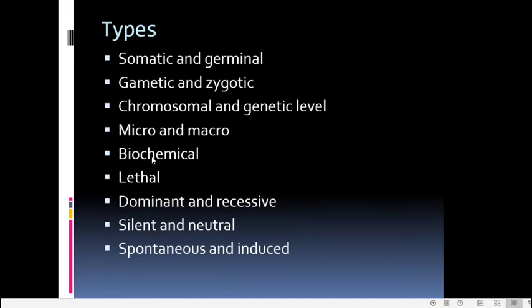Biochemical mutations are those which affect the production of certain enzymes. If a gene mutation results in production of an abnormal enzyme, or non-production of an enzyme, that will affect the biochemical pathway catalyzed by the enzyme and subsequent steps will be affected, leading to phenotypical changes manifested as diseases. Examples are phenylketonuria, albinism, and alkaptonuria — all affecting enzyme production and biochemical processes in the body.